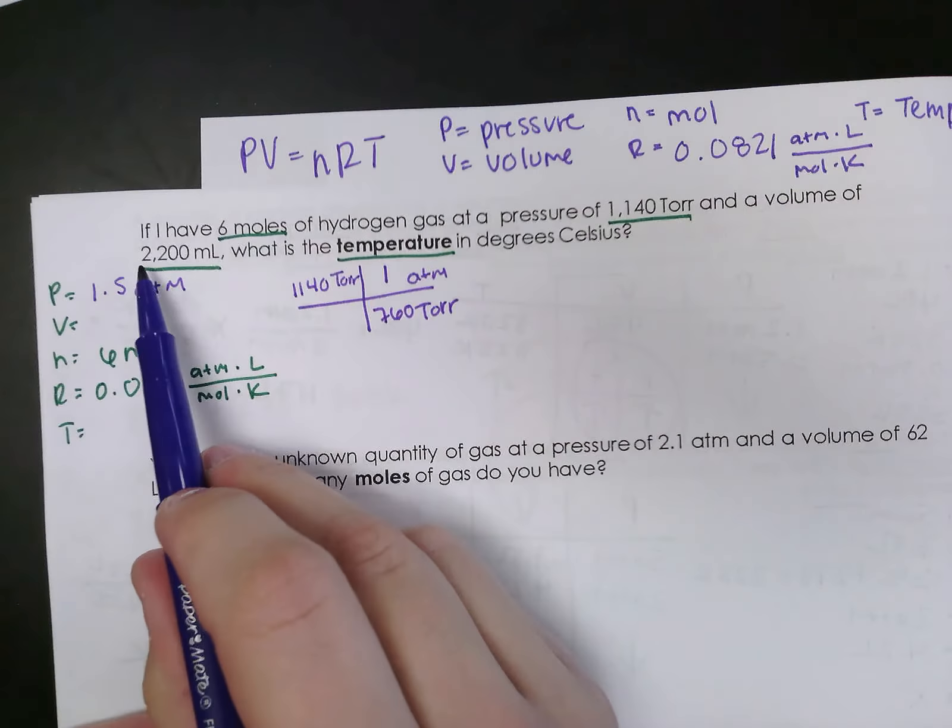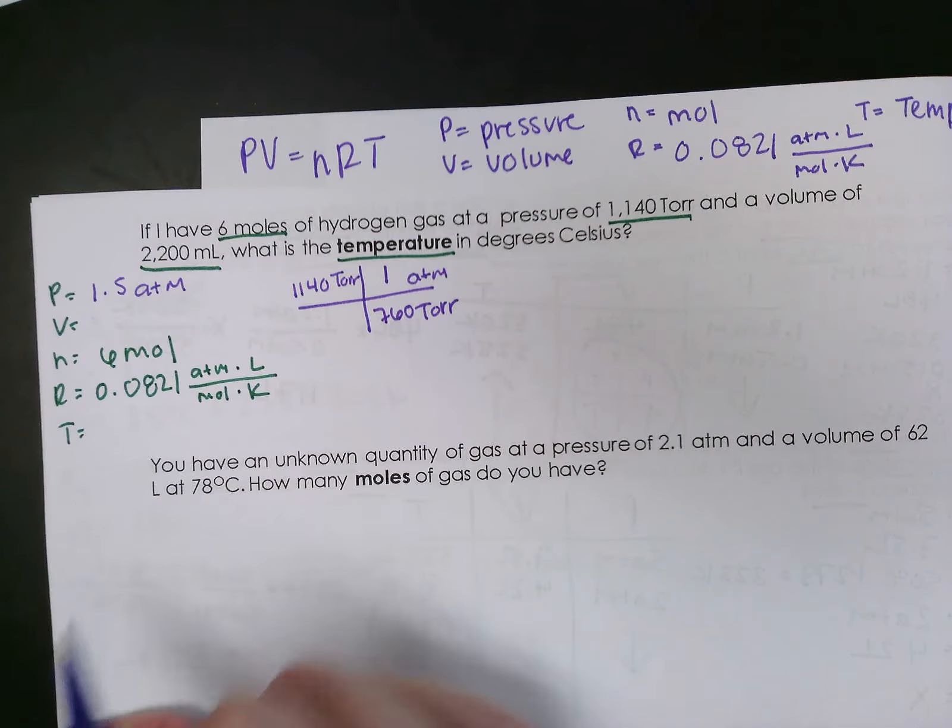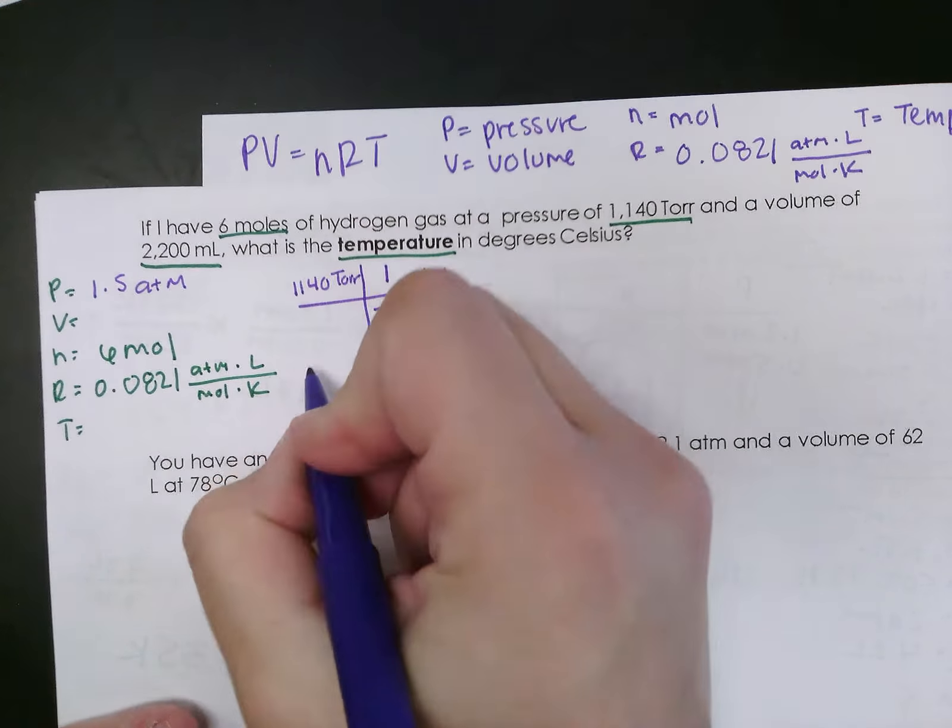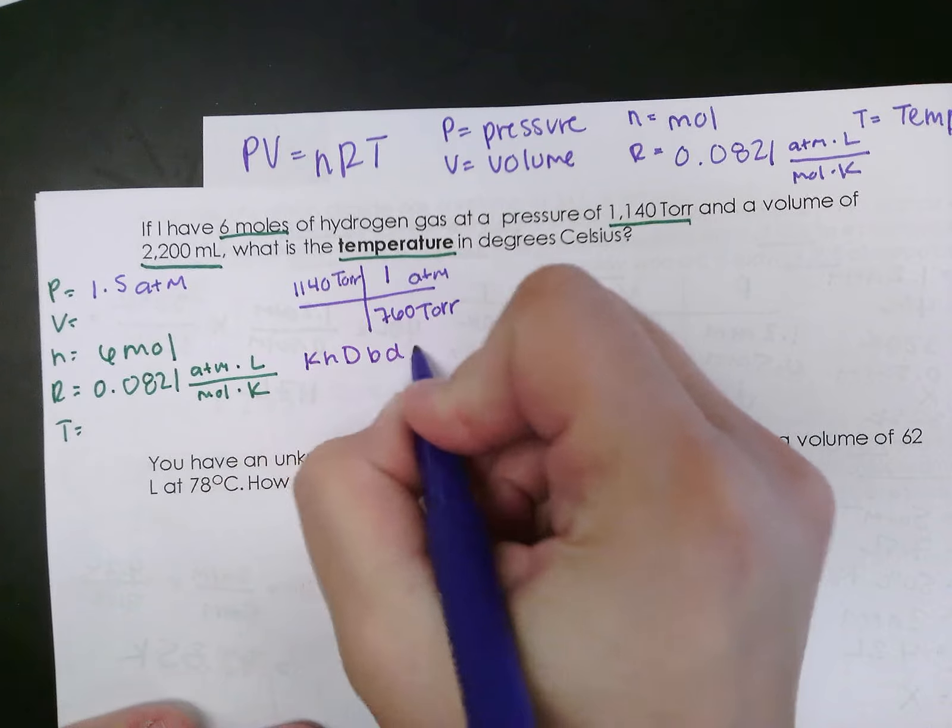Then I see that my volume is 2,200 milliliters. Well, I need that to be in liters. So if you think back to what we did at the very beginning of this unit, we talked about metric to metric. We said Kevin hates dates because dates cost money.